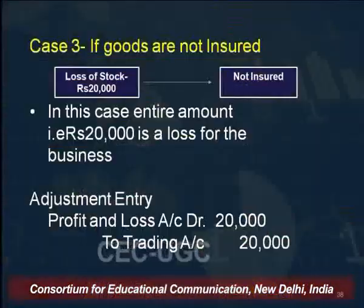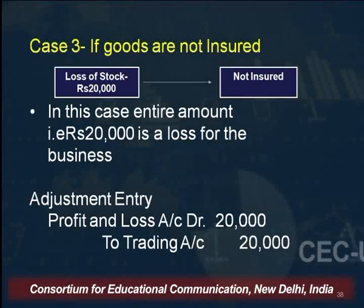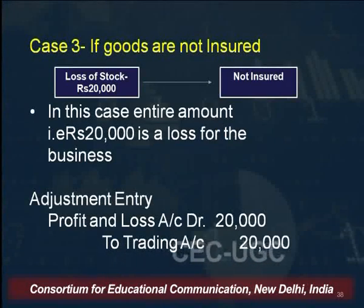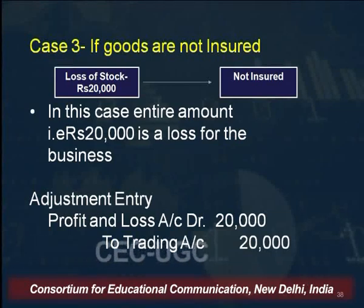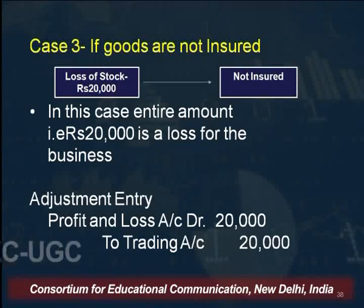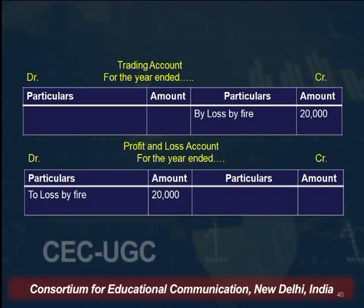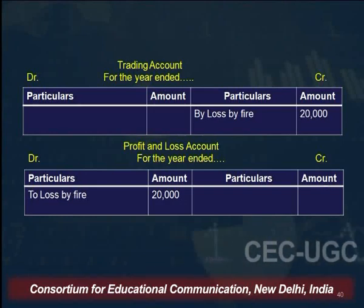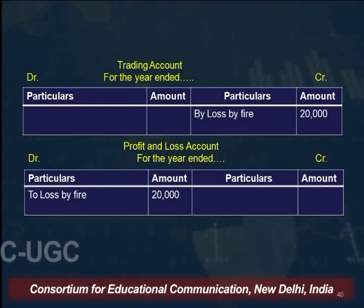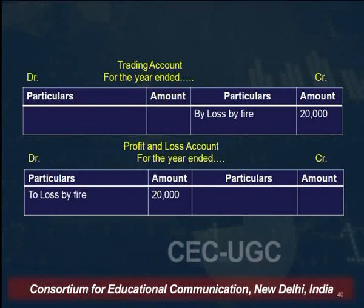Case 3: if goods are not insured. The entire amount of stock — say Rs. 20,000 — will be treated as a loss. The entire amount would be shown on the debit side of the profit and loss account. The adjustment entry would be: profit and loss account debit Rs. 20,000 to trading account Rs. 20,000. You can also write purchases instead of trading account. Loss by fire would be shown on the credit side of the trading account, and the entire amount of loss — since not insured — would be shown on the debit side of the profit and loss account.